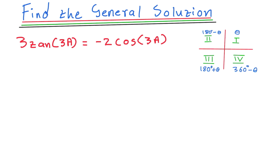They gave us 3tan(3a) = -2cos(3a). The first thing you do whenever you see tan is change it to sine over cosine, especially if the other side doesn't have tan. So I change my tan: 3 times (sin(3a)/cos(3a)) equals -2cos(3a).